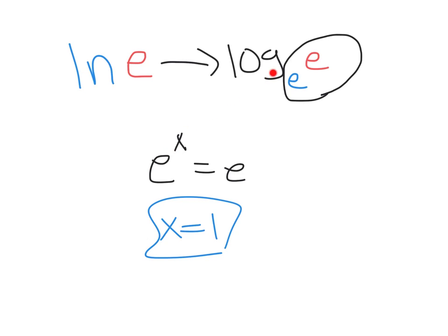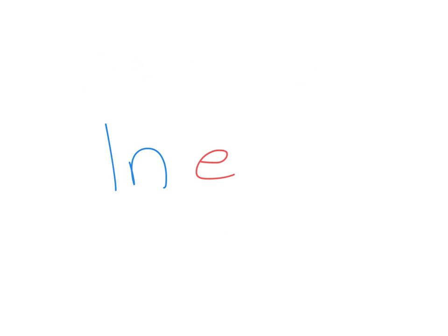So since we have this inverse relationship, whenever you see ln and e, we know that these are simply going to be inverses of one another. They're going to cancel each other out, leaving us with just 1 or whatever happens to be left over.